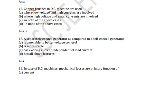Next question: copper brushes in DC machines are used where — low voltage and high currents are involved, high voltage and small currents are involved, in both cases, or none of the above? The correct answer is low voltage and high currents. Generally we use carbon or graphite brushes, but for low voltage and high currents we use copper brushes in DC generators.